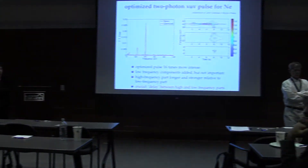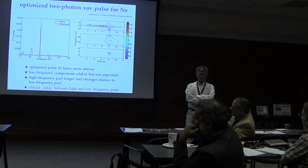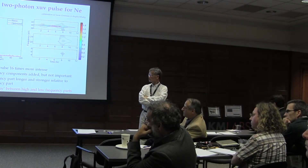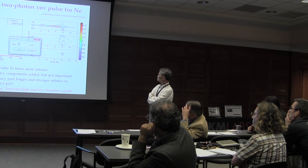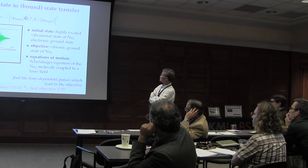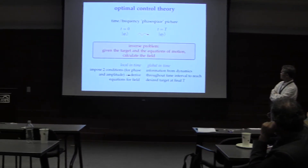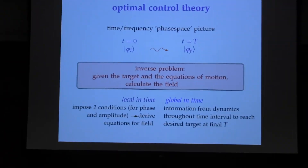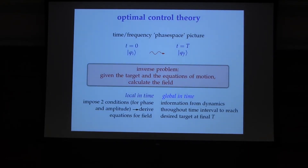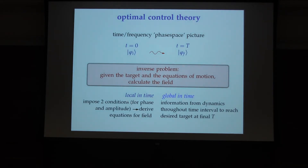Could you give a general idea of the difference between global and local optimal control, and which one to choose? In global control, you do an iterated solution of the control equations — propagating your initial state forward and your target state backward, matching them at intermediate times iteratively, so you use information from the whole time interval. In local control, you propagate only once and impose two conditions corresponding to your controlling objective, which yield an equation for the phase and amplitude of the field.